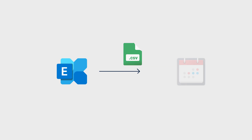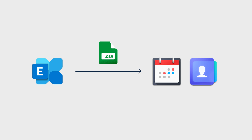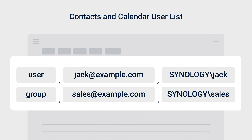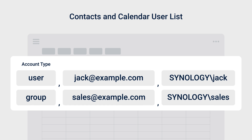The user list must be migrated through a CSV file. You are welcome to use the template provided in the video description for editing. In a CSV file, each piece of information is separated by a comma. Fill in the following information from left to right: Account Type — enter either user or group according to the source account type. Group mapping information will only be used to migrate calendar sharing permissions to Synology Calendar. Exchange Account — enter the source account's email address. DSM Account Name — enter the destination account name in the format domain backslash username.